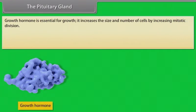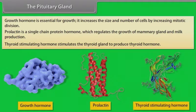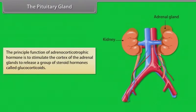Growth hormone is essential for growth; it increases the size and number of cells by increasing mitotic division. Prolactin is a single-chain protein hormone which regulates the growth of mammary glands and milk production. Thyroid-stimulating hormone stimulates the thyroid gland to produce thyroid hormone. The principal function of adrenocorticotrophic hormone is to stimulate the cortex of the adrenal glands to release a group of steroid hormones called glucocorticoids.